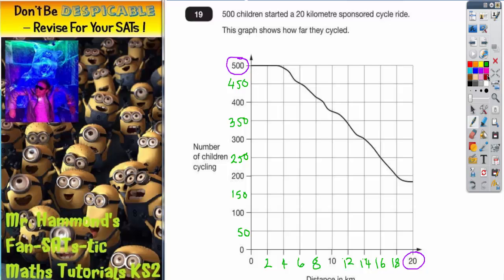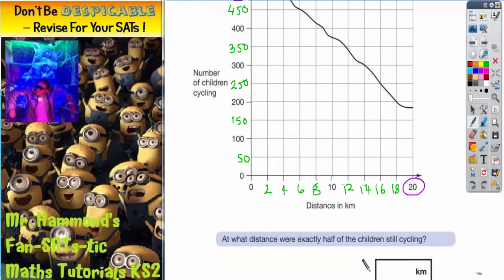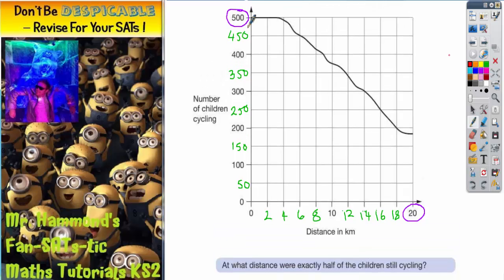Okay, so now that we've got our completed scale, that's going to make it easier for us to answer the question. So at what distance were exactly half of the children still cycling? So we need to half the number of children, so we're going to do half of 500. So half of 500, halfway up, that's 250.